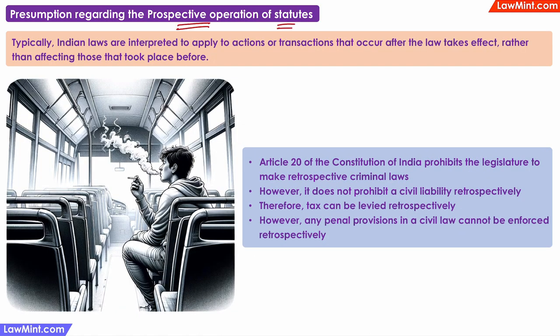Presumption regarding the prospective operation of statutes. Typically, Indian laws are interpreted to apply to actions or transactions that occur after the law takes effect, rather than affecting actions or transactions that took place before the law came into force. For example, if a law passed on 1st December 1999 makes smoking in public places a punishable offence and comes into force from 1st January 2000, then people caught smoking in public on or after 1st January 2000 can be prosecuted. But people who were smoking in public on 31st December or before should not be prosecuted. In other words, laws are generally assumed to operate prospectively, not retrospectively.